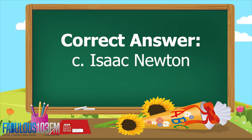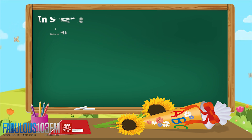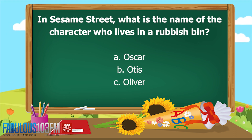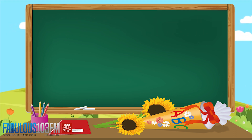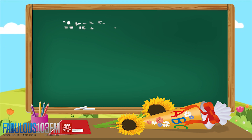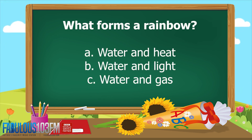The second question yesterday — I bet you managed to get this one right. In Sesame Street, what is the name of the character who lives in a rubbish bin? Is it A) Oscar, B) Otis, or C) Oliver? The correct answer is A, Oscar.